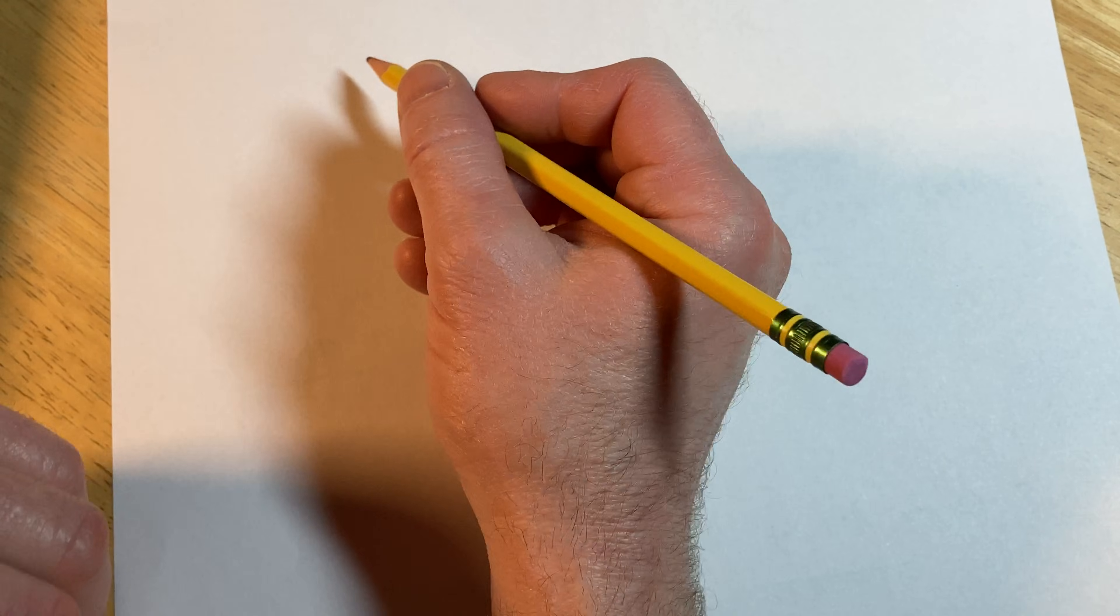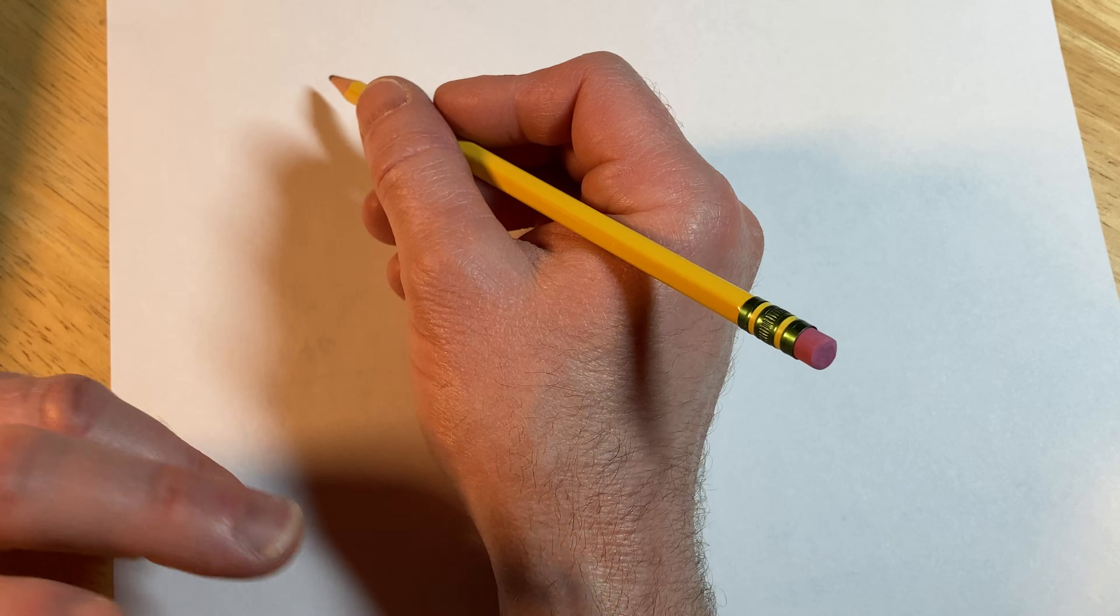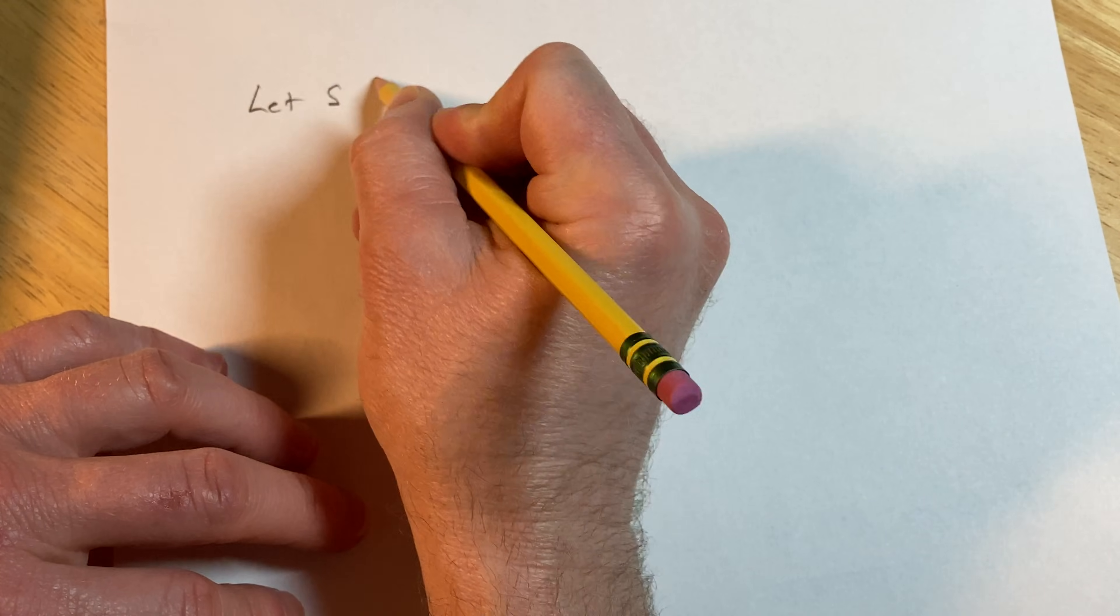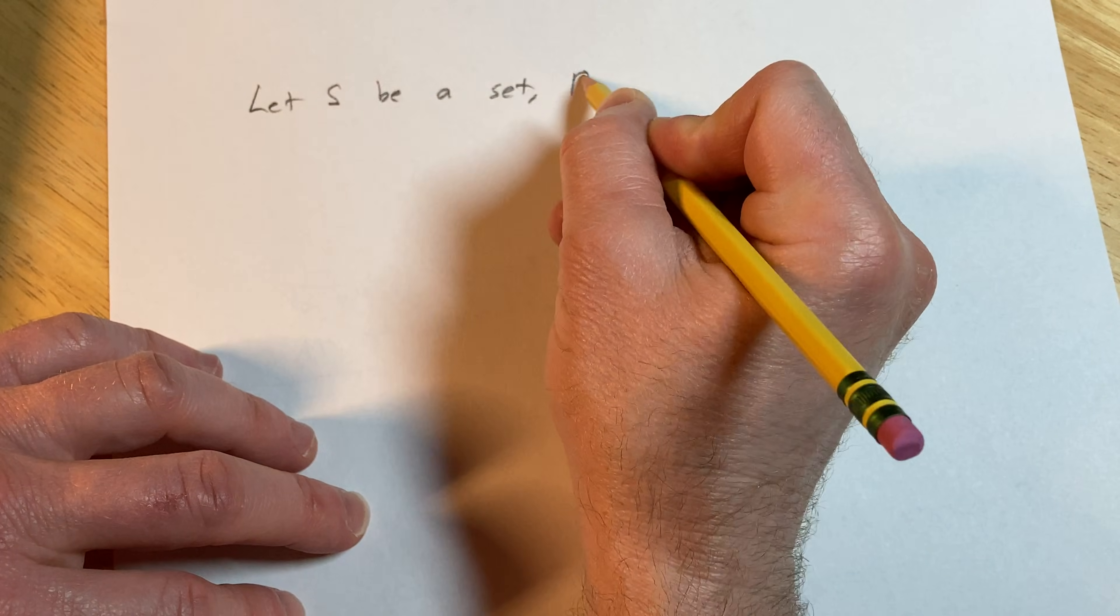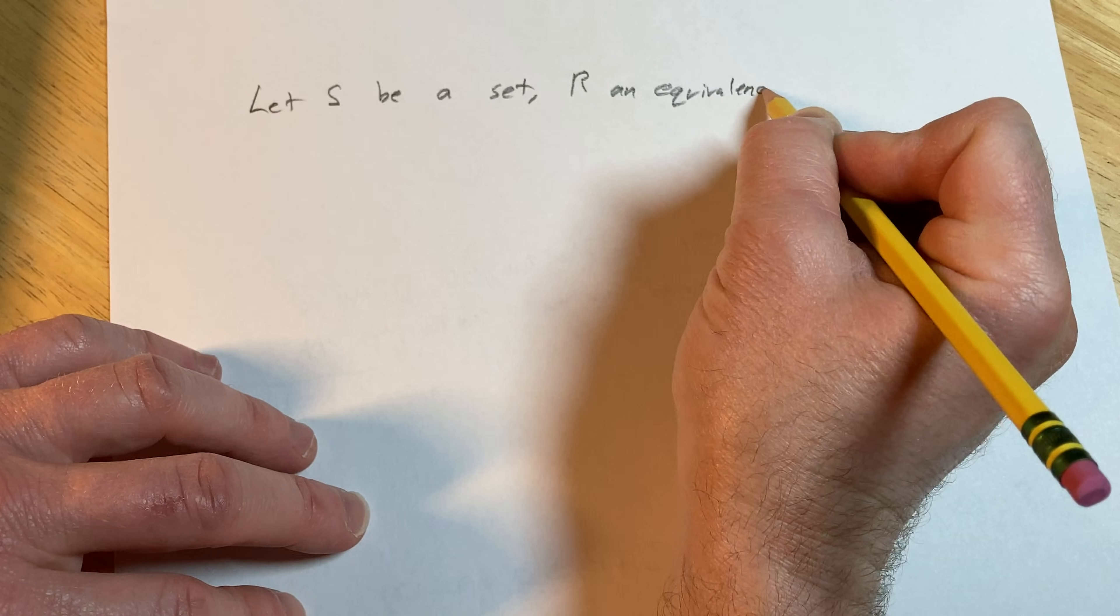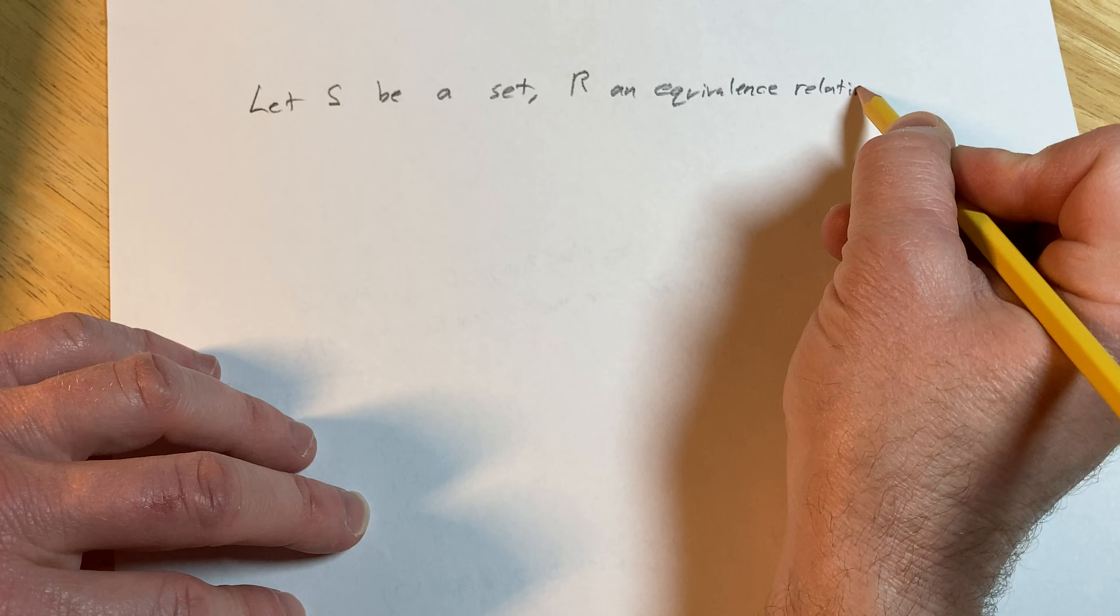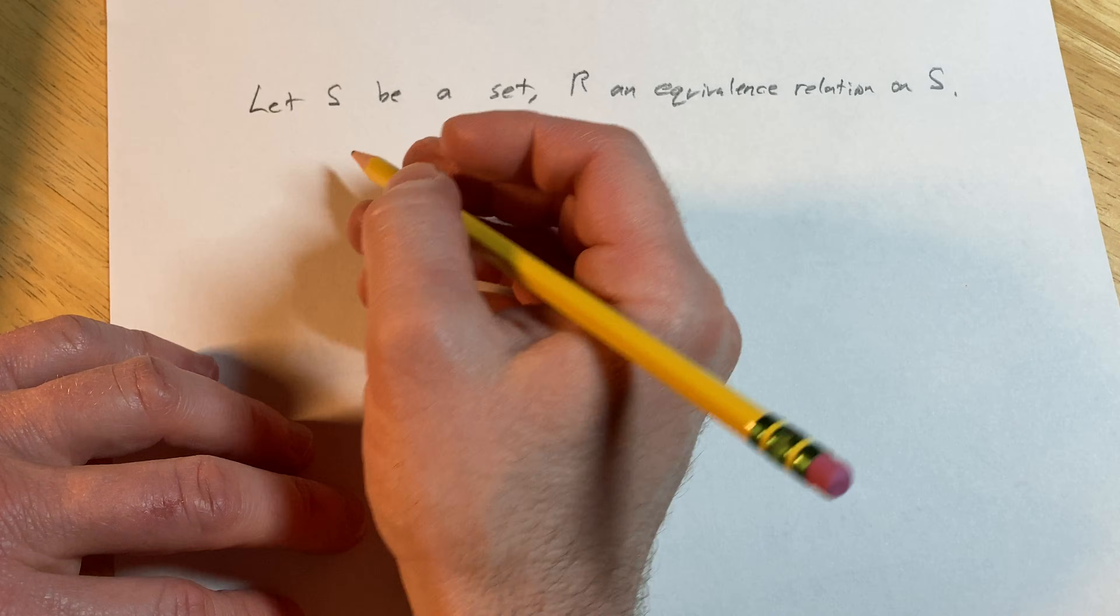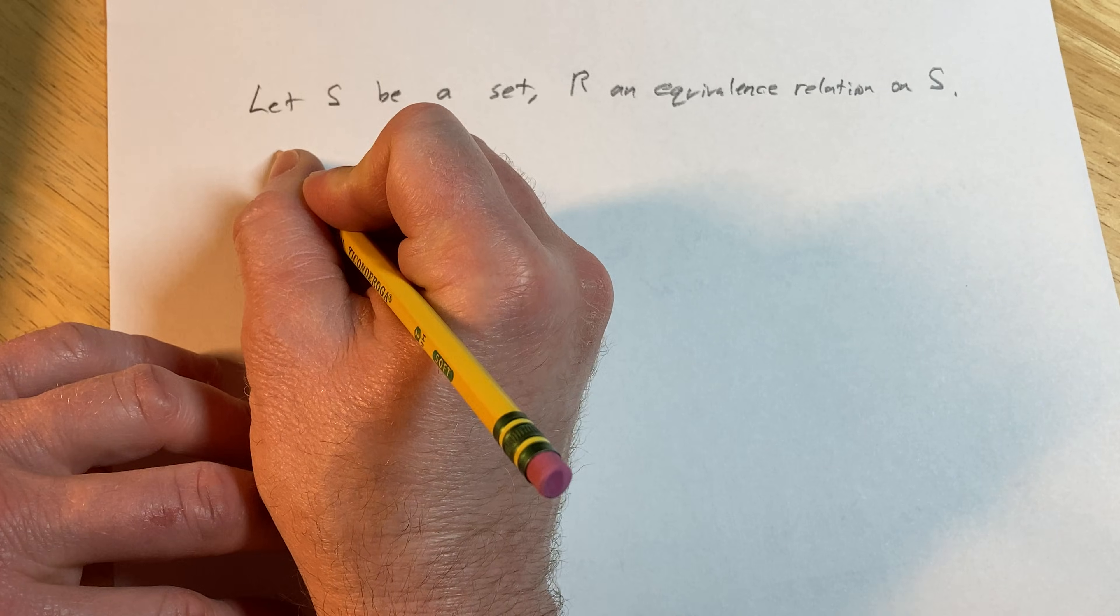We're going to define the equivalence class of an element under a relation. So the setup is: let S be a set, R an equivalence relation on S.